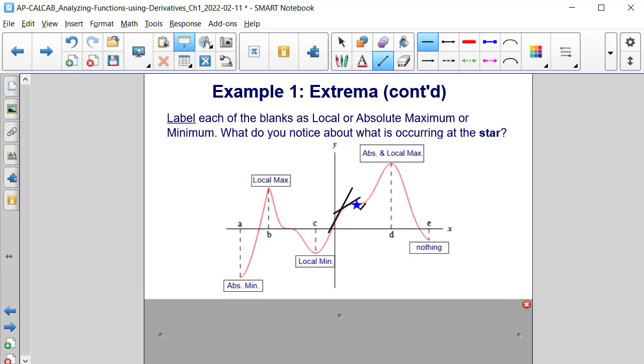And we also have positive slopes to the right of it. So therefore, at this star value, the slopes do not change. They continue to remain positive on both sides.